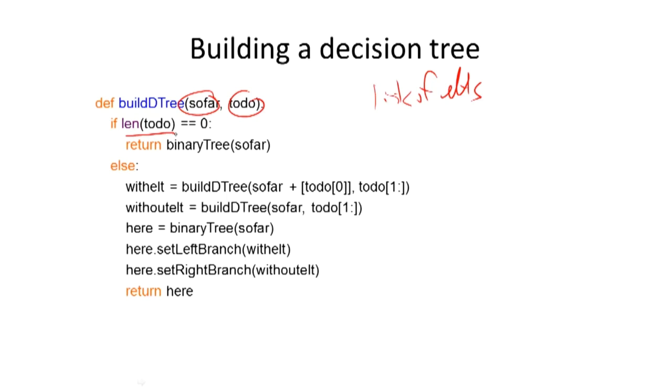If there's nothing left to consider, there's nothing left to be added in, then I'm done. So I'll just return a binary tree whose value is that list of things I decided to include. And by the way, those things might be objects of some sort.